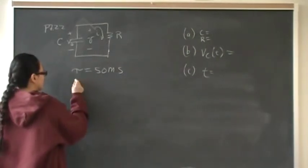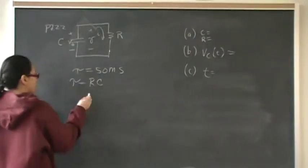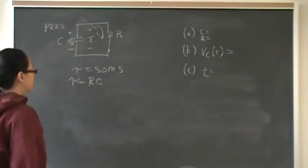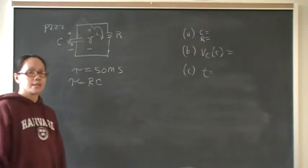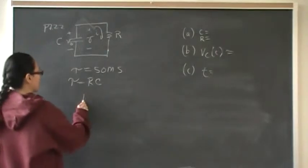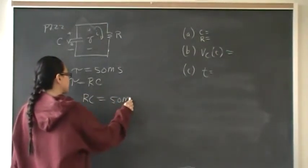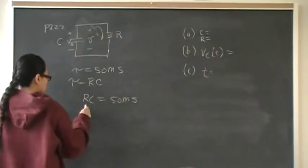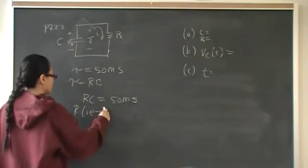So tau we want to be 50 milliseconds. And tau is also R times C. So we are in the position of designing. I went to Appendix H, my imaginary toolbox and I chose one microfarad. So all we have to do is play RC is equal to 50 milliseconds.